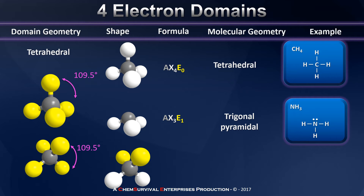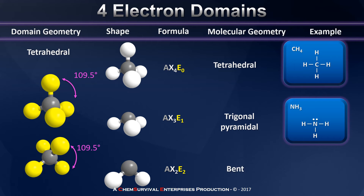Similarly, let's imagine we have an AX2E2 molecule — two lone pairs and only two bonding domains. If I leave the influence but remove the appearance of my lone pairs, I find that I have a molecule that's bent. But this time it's bent at about 109.5 degrees. An example of a molecule like this is water, H2O, in which the central oxygen has two bonding domains to hydrogens and two lone pairs as well.